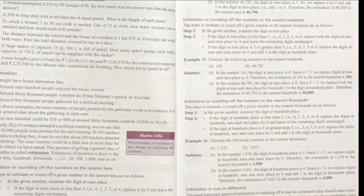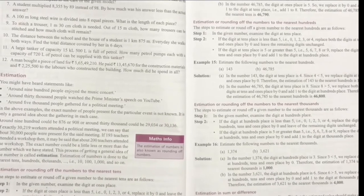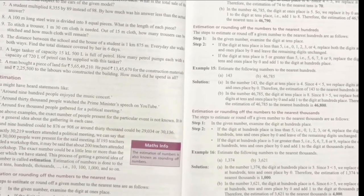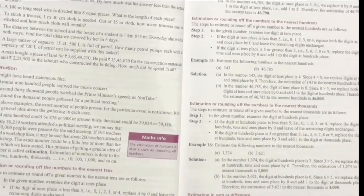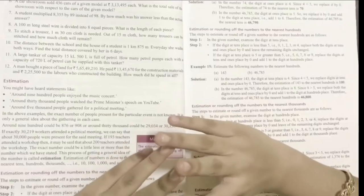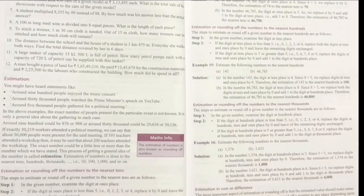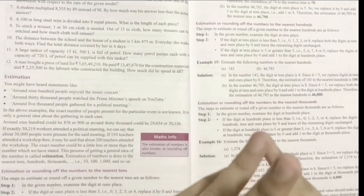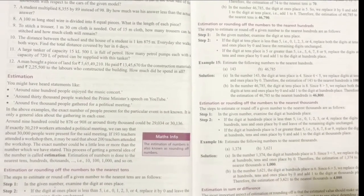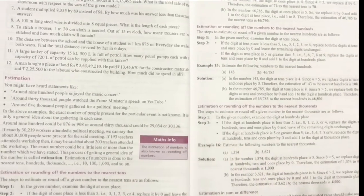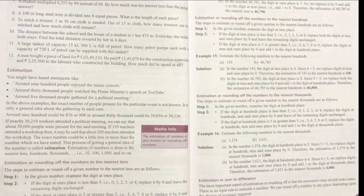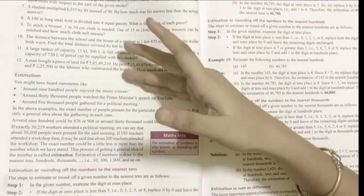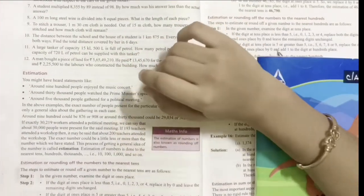We'll move on to the next topic which is estimation. You might have heard statements like: around 900 people enjoyed the music concert, around 30,000 people watched the Prime Minister's speech on YouTube, around 5,000 people gathered for a political meeting. If a door costs 692 and someone says the door costs 700 rupees, you might wonder how. The value written is 692, but it's been estimated to 700. We will be learning how to do that — estimation is also called rounding off.